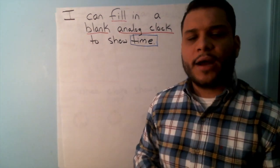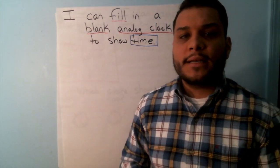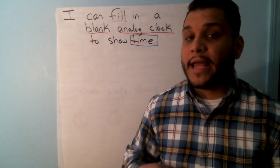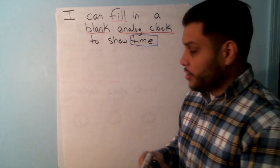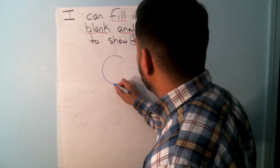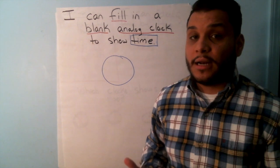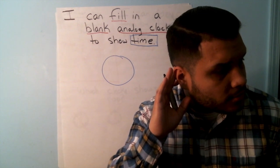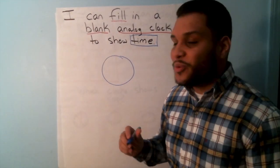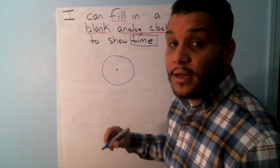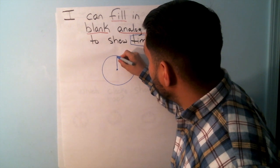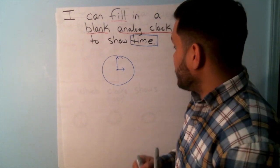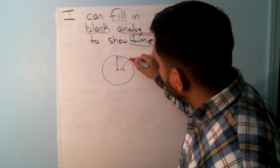Before I get started — if I'm going to fill in a blank analog clock, how do you think I will show that analog clock? On Monday we took some time to identify an analog clock. We said that an analog clock is in the shape of a circle. We also said that an analog clock has two hands — the long hand, which is our minute hand, and the short hand, which is our hour hand.